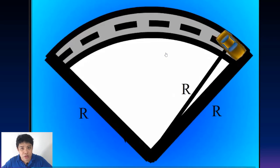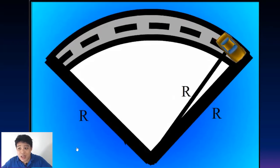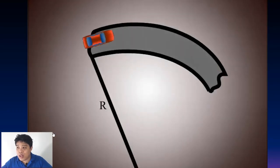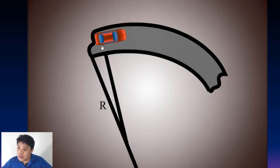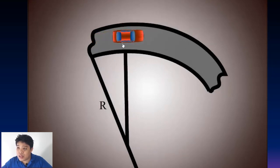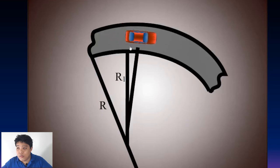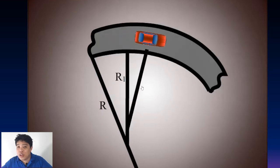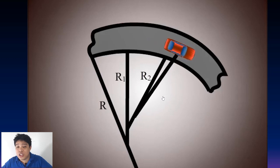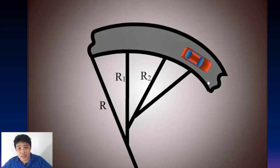Of course, a circle has a constant radius of curvature. Look at our animation of the transition spiral. As you can see, as the vehicle traverses the transition curve, the radius is constantly changing as it moves around it.